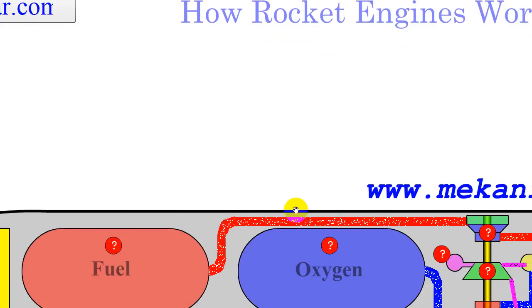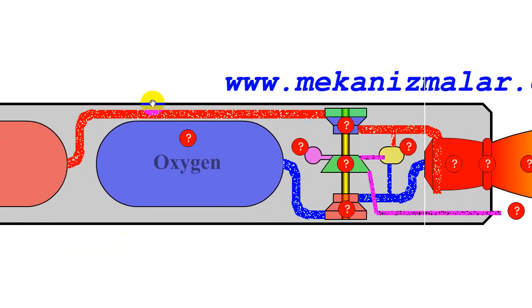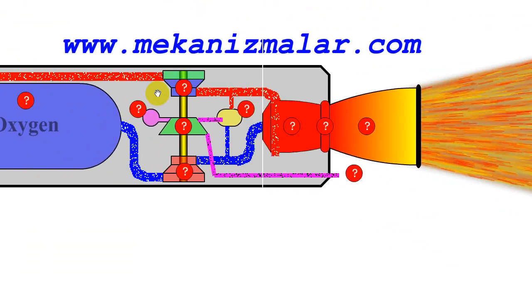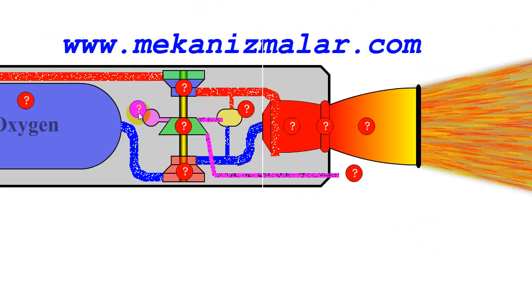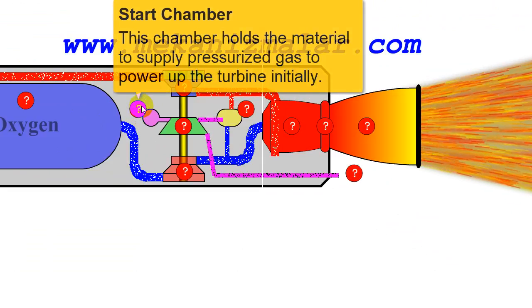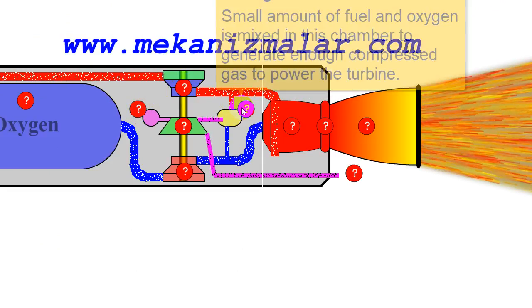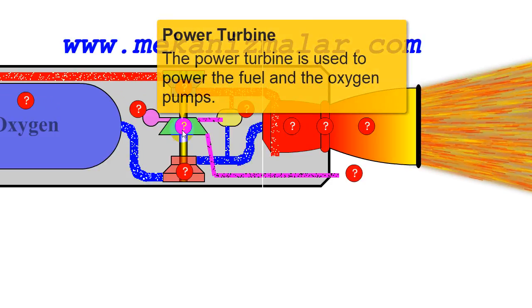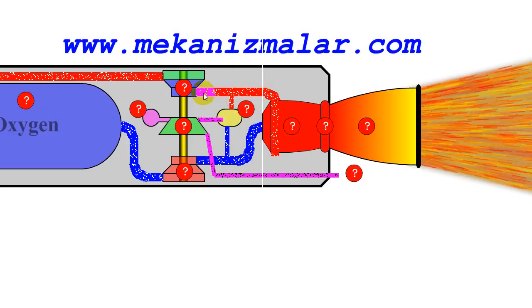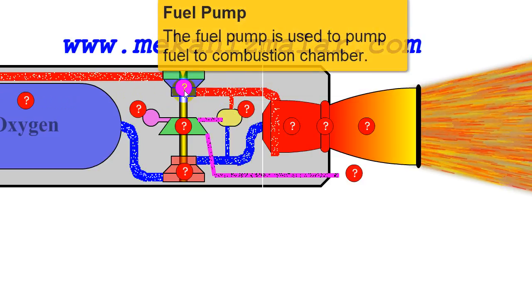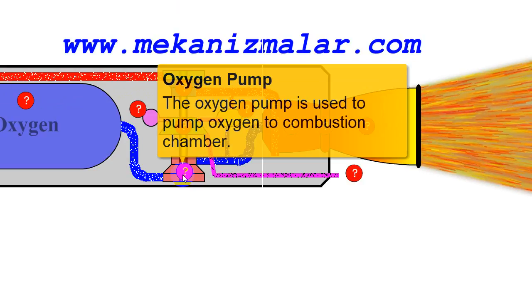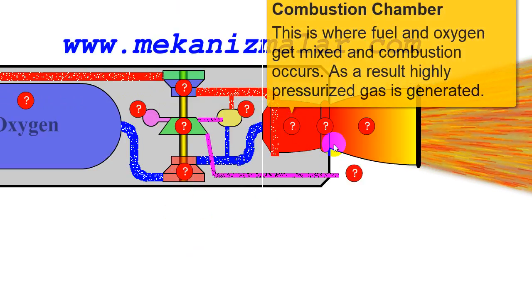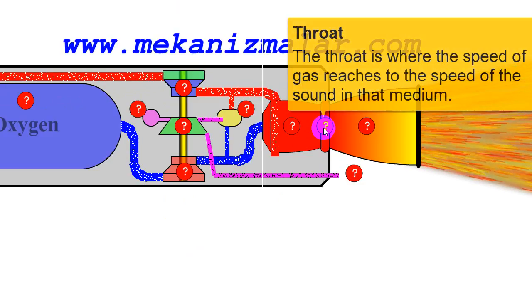The fourth and most complicated part of the rocket is the rocket engine. The main parts of the rocket engine are start tank, mixing tank, turbine for power generation for the pumps, fuel boost pump, oxygen boost pump, combustion chamber, throat, and nozzle.